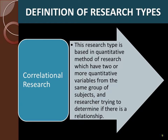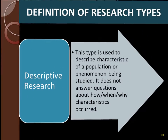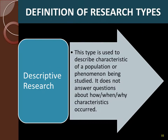Correlational research, as indicated by the name itself, is used to see whether there is a relationship or covariance between two or more variables under study. Descriptive research is important to describe characteristics of the selected population, and it does not answer any questions.